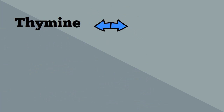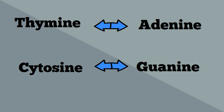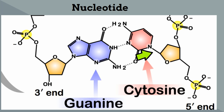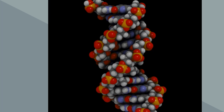Thymine always pairs up with adenine and they form hydrogen bonds. Cytosine and guanine always pair up together and they also form hydrogen bonds. These base pairs always pair up with the sugar, making a very long molecule. Because of the shape it is twisted, so it is a helix, and it is two-sided so it is called a double helix.